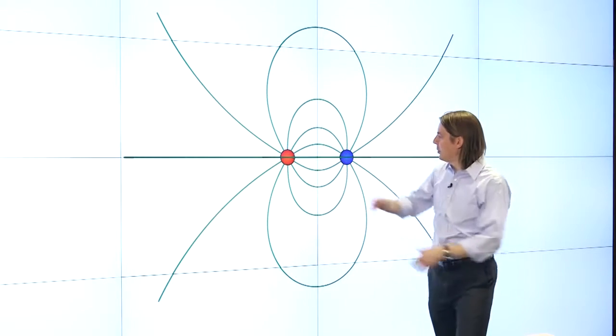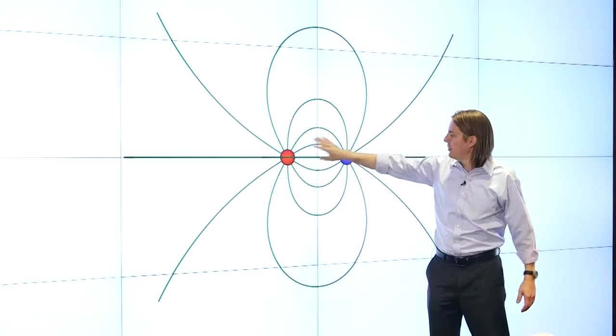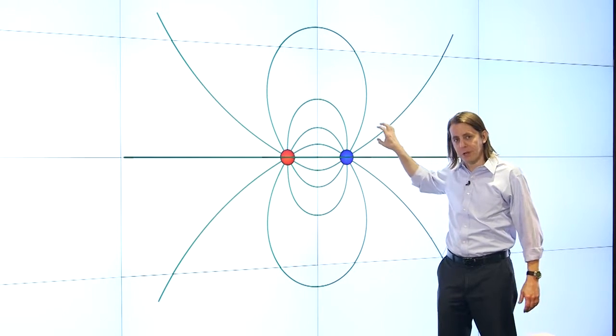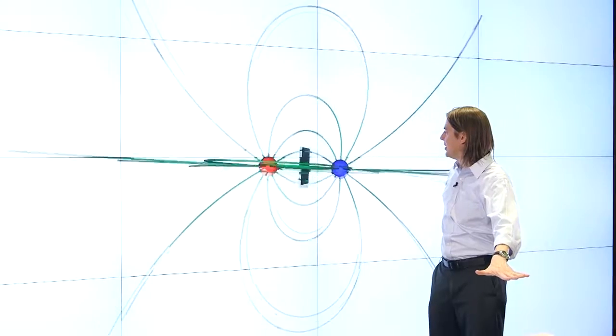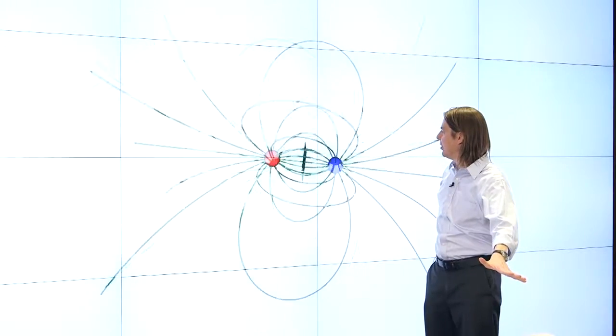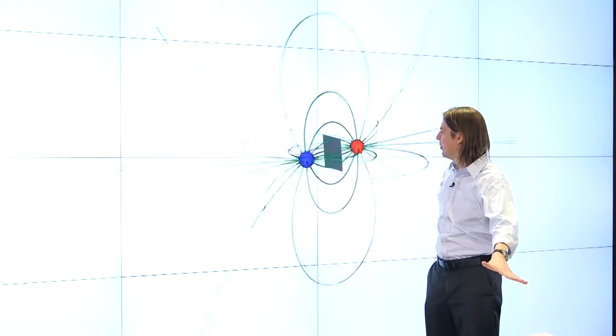So here you can see the field lines as we would draw them on the board with a positive charge and a negative charge, and the green, or the field lines going between them. But really, this is a three-dimensional object. You can see that there's field lines going in all three dimensions off of the particles.